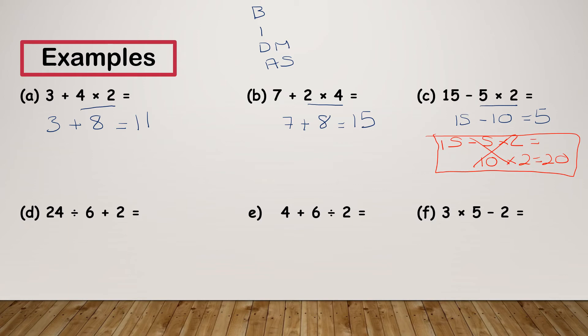Let's look at some more examples. 24 divided by 6 plus 2 — division comes before addition, so I need to do my division first. 24 divided by 6 is 4, plus 2 gives me 6. Next: 4 plus 6 divided by 2 — division comes before addition, so I need to do 6 divided by 2 first, which gives me 3. So my sum has actually asked me for 4 plus 3, which is 7.